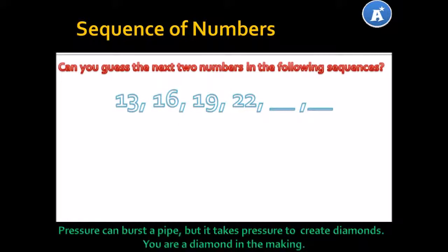Let's take, for example, 13, 16, 19, 22. The trick to filling a sequence out is simply looking at the first two numbers. If you look at 13 and 16, how can you get from 13 to 16? If you said 3, that's correct — if you add 3 to 13 you get 16. How about from 16 to 19? If you said 3, that is correct again. Do you see that we have developed a pattern? It's simply adding 3 to every number. So then, how can I get from 22 to the next number? I have to add 3.